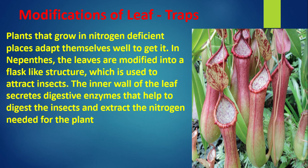Modification of leaves — Trap plants: Plants that grow in nitrogen-deficient places adapt themselves to obtain nitrogen. In Nepenthes, the leaves are modified into a flask-like structure which attracts insects. The inner wall of the leaf secretes digestive enzymes that help to digest the insect and extract the nitrogen needed for the plant.